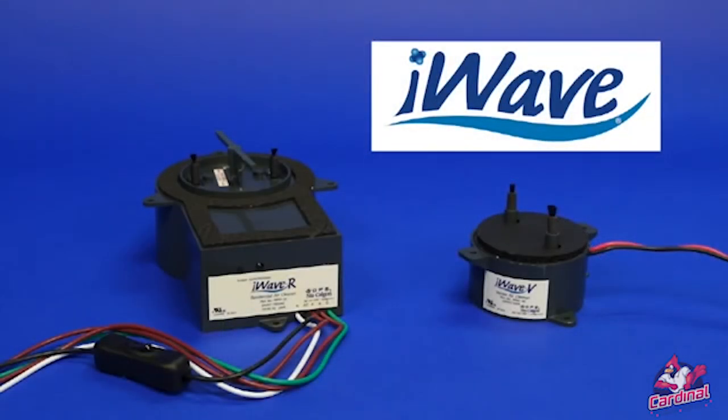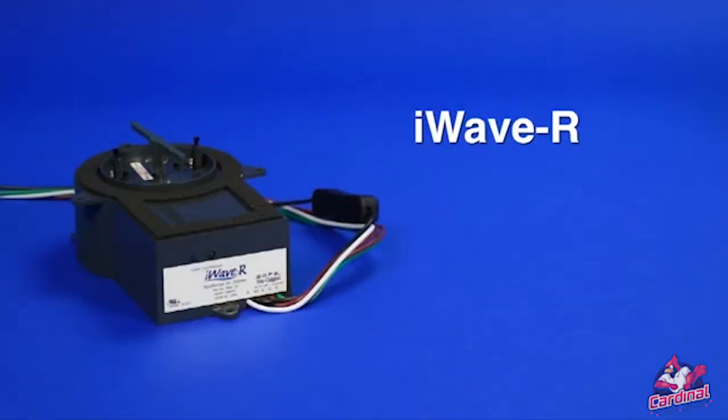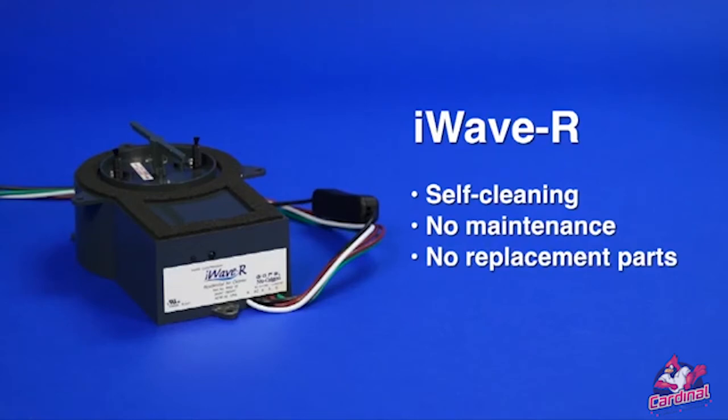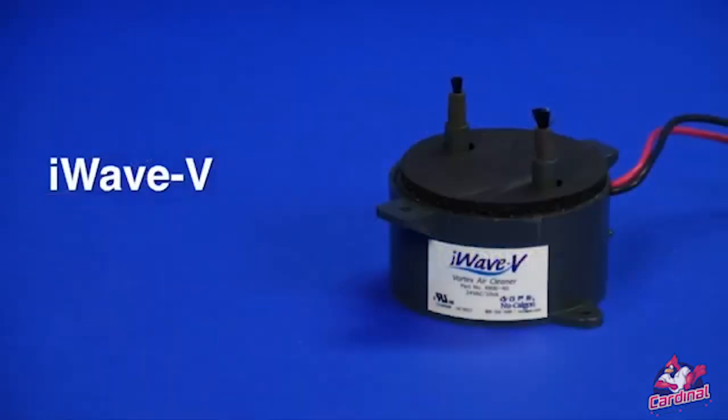When choosing an iWave air purifier for your home, we offer two choices: the iWave-R is a self-cleaning, no maintenance air purifier with no replacement parts. An alternative low-maintenance option is the iWave-V, which requires periodic cleaning but has no replacement parts.